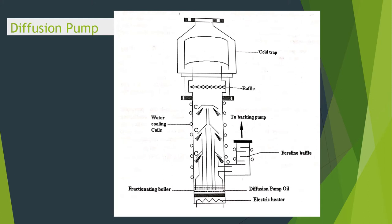Looking at the figure of a diffusion pump, you can see a boiler containing the diffusion pump oil. The bottom part is closed with an electric heater. When heat is applied, the vapor produced moves upward through annular jets. This portion is known as the chimney. The baffle valve and water cooling coils are placed here to condense the vapors.